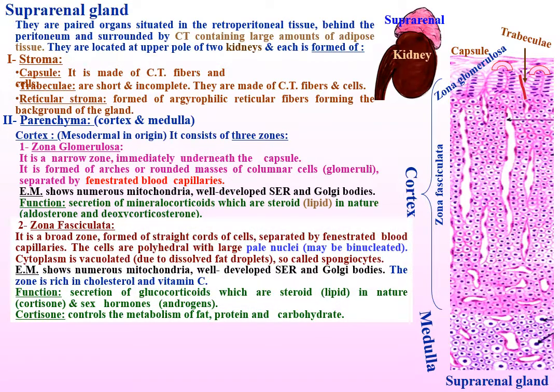Zona fasciculata is a broad zone formed of straight cords of cells separated by fenestrated blood capillaries. The cells are polyhedral with large pale nuclei, and may be binucleated. The cytoplasm is vacuolated due to dissolved fat droplets, so they are called spongiocytes.